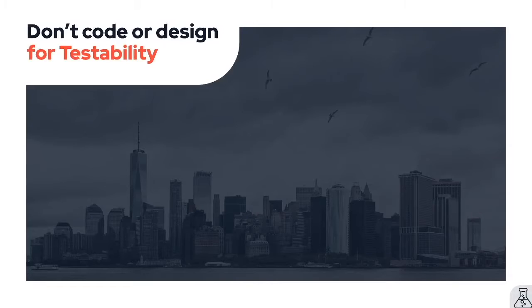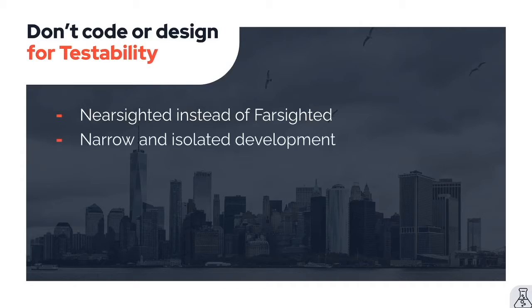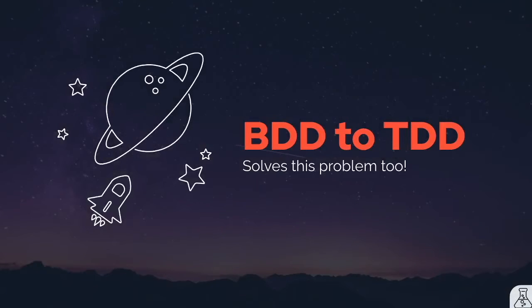The next mistake is that devs don't code or design for testability. This happens because things were designed through a nearsighted lens instead of a farsighted one — only caring about getting a feature deployed, instead of also thinking about its longevity, reliability, and usage. Without proper testing and systems thinking, you're building every piece in complete isolation with very narrow inputs and outputs. This leads to exponentially adding tech debt. Each piece may seem simple, but once you plug it into a tightly coupled system, it gets much harder to observe, test, and operate. Eventually you'll need to test it, but you realize how complicated the system has become and making it testable after the fact looks impossible — so the team usually turns to rewriting everything. The solution is again BDD to TDD: testability wouldn't be an issue if your design is driven by testing and the scenarios you want to cover.